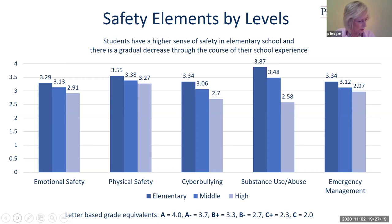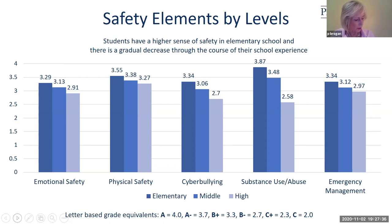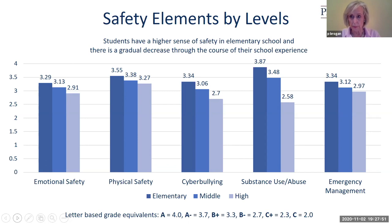In terms of substance abuse: students use alcohol or drugs, it's easy for students to access those, students think it's okay to smoke, drink, or use drugs. Emergency readiness: students know what to do in an emergency, and if students hear a threat about school safety, they would report it to someone in authority. Overall scores are in the favorable range, but we do see a decline as we go forward.